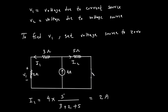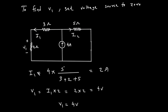After replacing the 10 volt source with a wire, our circuit changes. The 4 ampere current source is now connected to two parallel branches. The left branch contains the 2 ohm and 3 ohm resistors in series. The right branch now contains only the 5 ohm resistor. Our goal is to find the current I1 that flows through the left branch. We can do this using the current divider rule. The total resistance of the left branch is 2 ohms plus 3 ohms, which equals 5 ohms. The resistance of the right branch is 5 ohms.